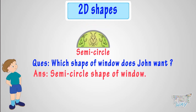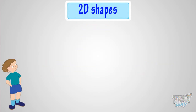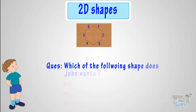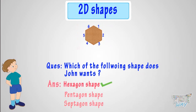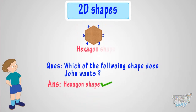John wants to cut cardboard in a six-sided shape. Which shape does John want? John wants a hexagon shape, as it has six straight sides.